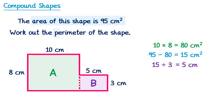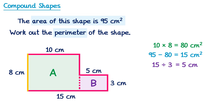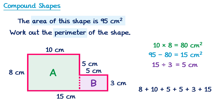Now we need to find all the lengths to calculate the perimeter. The horizontal 10 centimeters and the horizontal 5 centimeters together make a total length of 15 centimeters at the bottom. Also, the vertical length of 8 subtract 3 gives us 5 for the remaining vertical side. Adding all lengths together — 8, 10, 5, 5, 3, and 15 — gives a total perimeter of 46 centimeters.